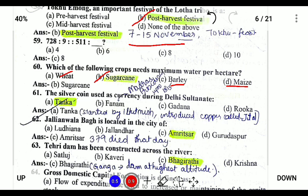Iltutmish was the one who started the currency Tanka. He also introduced a silver currency known as Jital. So Jital and Tanka are related to the Delhi Sultanate. Next, Jallianwala Bagh is located in Amritsar, and on 13th April 1919 the Jallianwala Bagh massacre occurred, in which 379 people died under General Dyer.